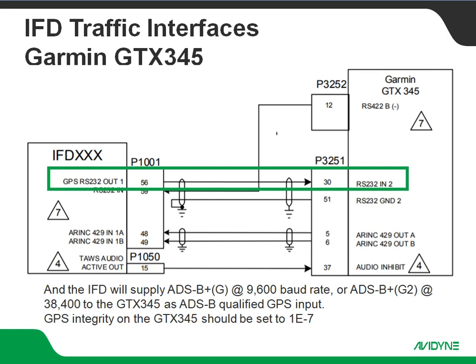Traffic is going to display on the IFD in a legacy TAS symbology format. We also have our GPS RS-232 output from the IFD, giving us a qualified ADS-B position source to the GTX 345 for ADS-B out. That's going to be at ADS-B plus G setting on the IFD side for a 9,600 baud rate, or we can do ADS-B plus G2 at a 38,400 baud rate. Either one is acceptable — just make sure it's set the same on both ends. GPS integrity on the GTX 345 side should be set for 1E-7.